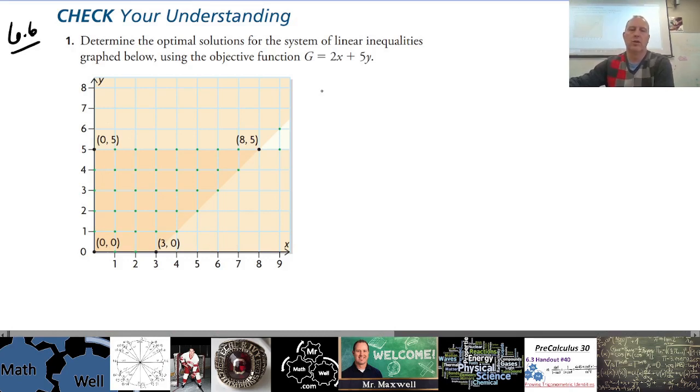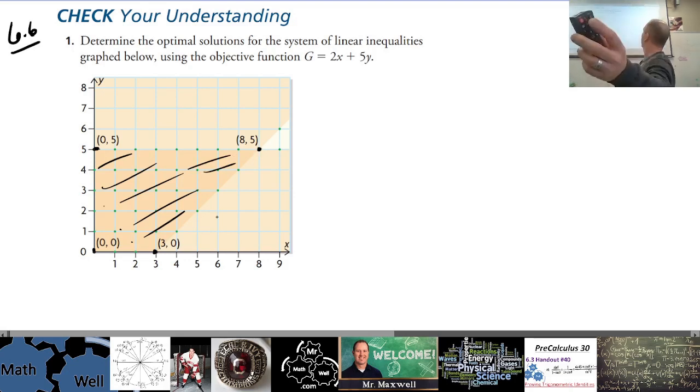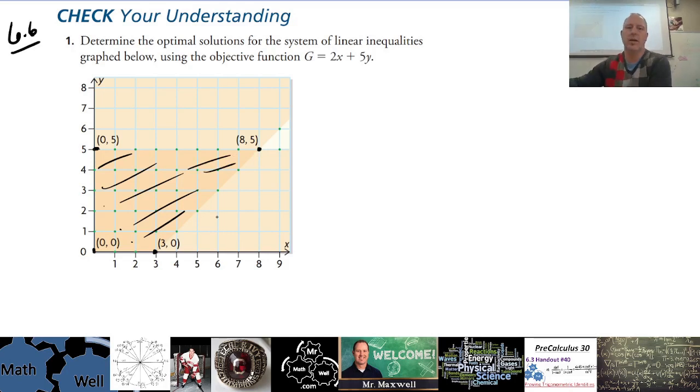The key points are the intersections of the boundaries of this feasible region which is in here. Those key points, the boundaries are important. If you want to turn this first bank of lights off you can.